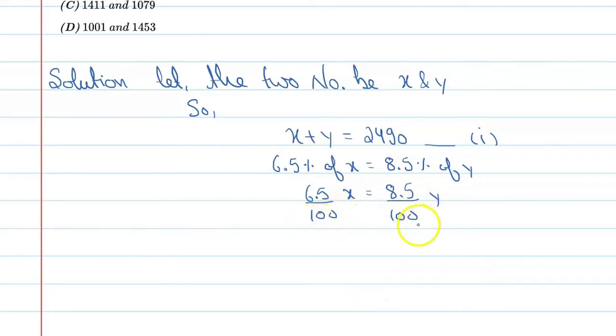So you can say x is equal to 8.5/6.5 y. Now let's simplify this. If you divide by 5, then you will get 17 upon 13 y.